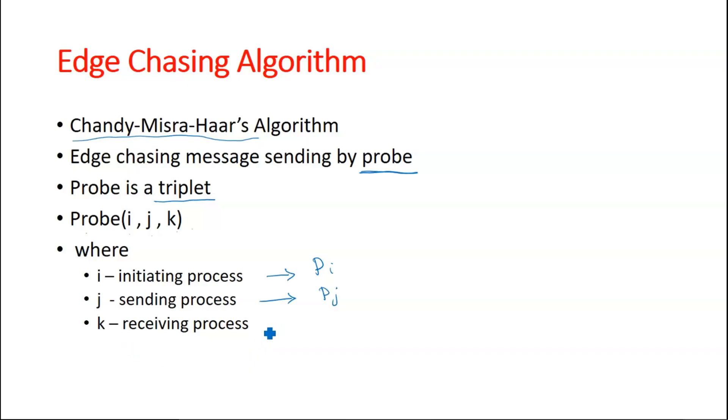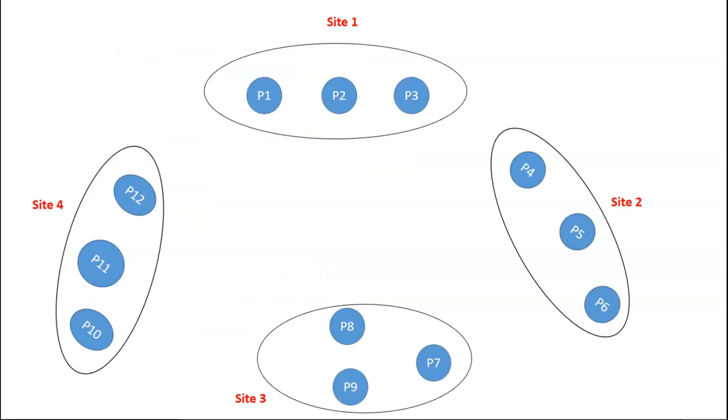And k is the receiving process which receives the probe, which is pk. In such a way the probe is formulated and circulated. Now coming to the example.